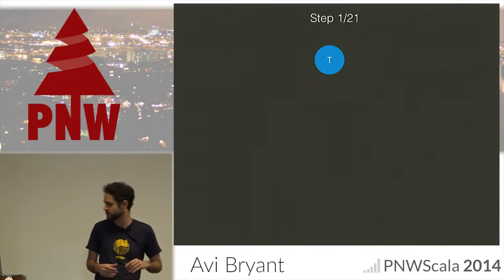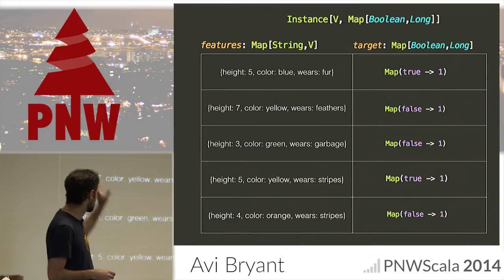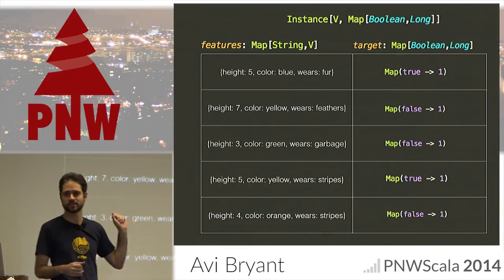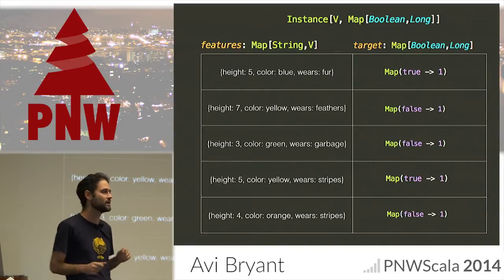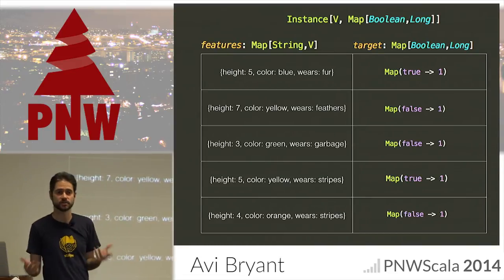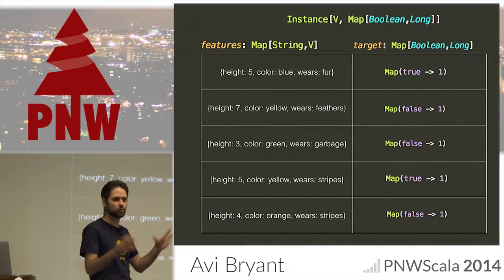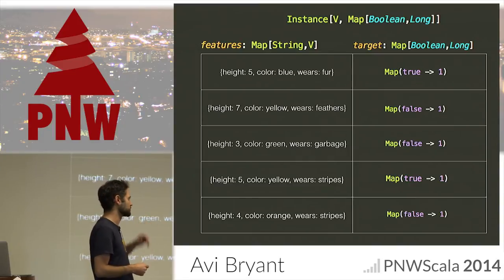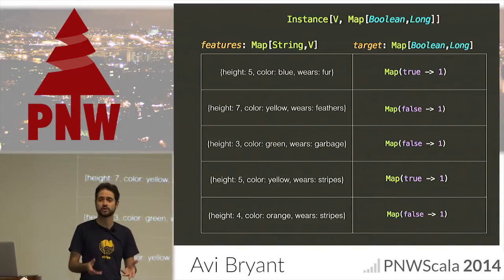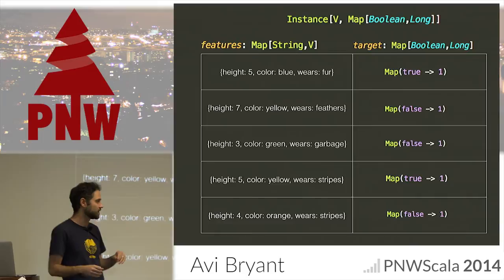First we need the base case — we need to be able to just construct the tree. Our training data has both the features (maps from string to some value type) and the targets. This is a degenerate case of the distribution: the training data has a distribution of labels, but in fact that's generally a map from true to one or false to one in the binary classifier case. The point is we want to be in this distribution space. These get more interesting as you sum them up — and summing them up is what we're going to do to produce our root node. If we want a root node that contains the overall distribution for the entirety of the training set, we just want to sum these all up.